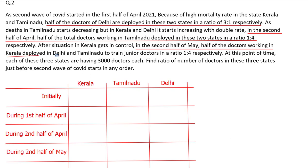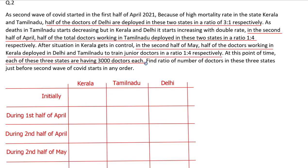After the situation in Kerala gets under control in the second half of May, half of the doctors working in Kerala are deployed in Delhi and Tamil Nadu to train junior doctors in a ratio of 1:4 respectively. At this point of time, each of these three states has 3000 doctors each. Find the ratio of number of doctors in these three states just before the second wave of COVID starts, in any order.